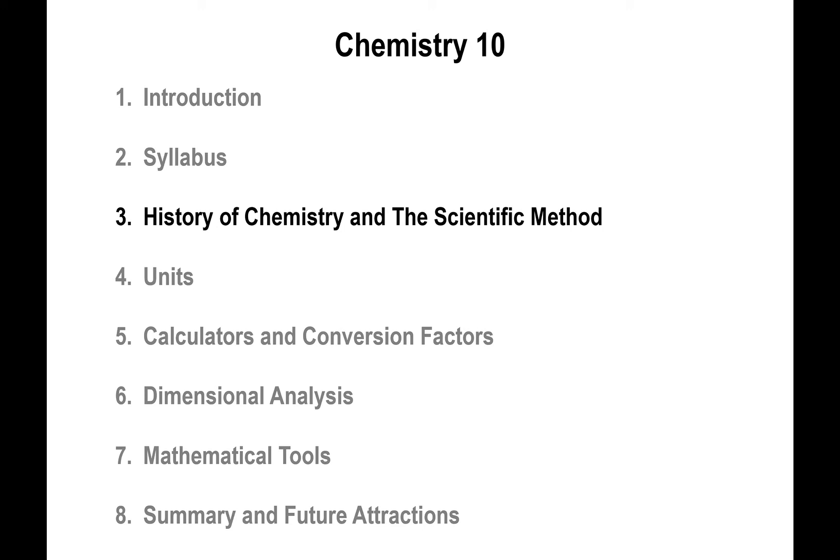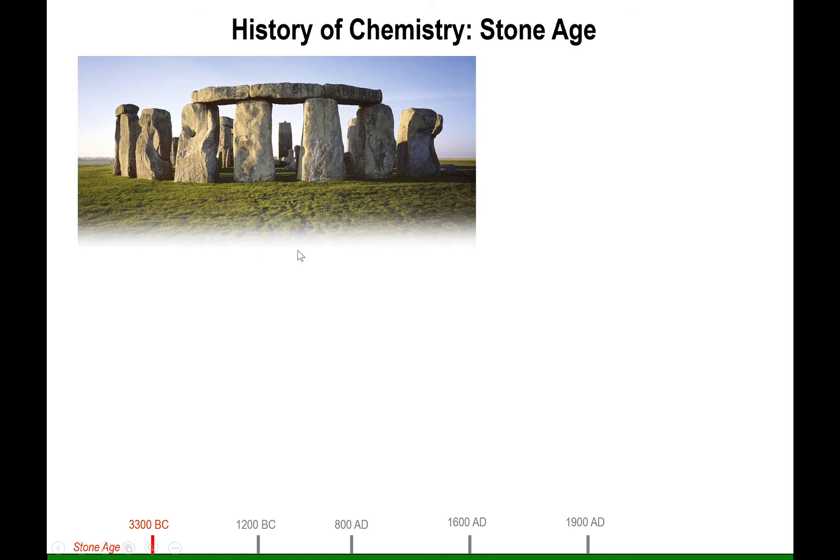This is our first lecture in intro to chemistry, and I'm going to start by talking about some of the historical aspects associated with chemistry dating all the way back to 3300 BC. This was known as the Stone Age.